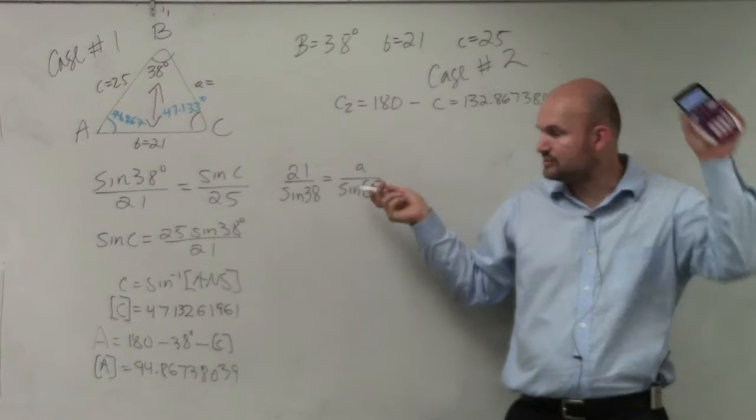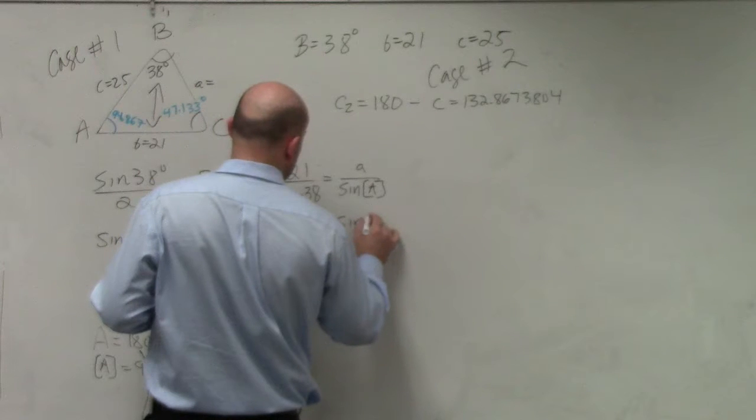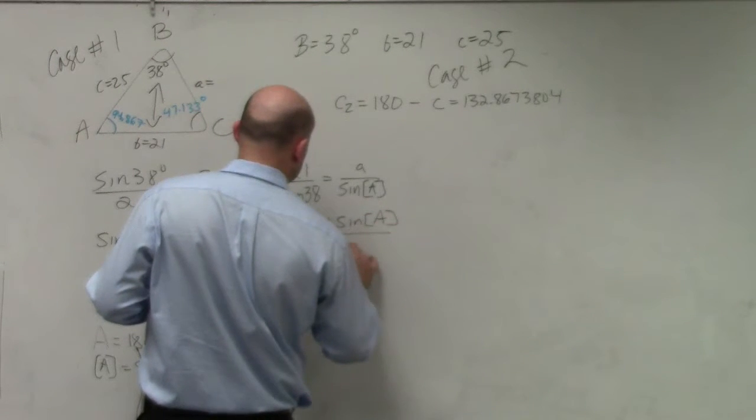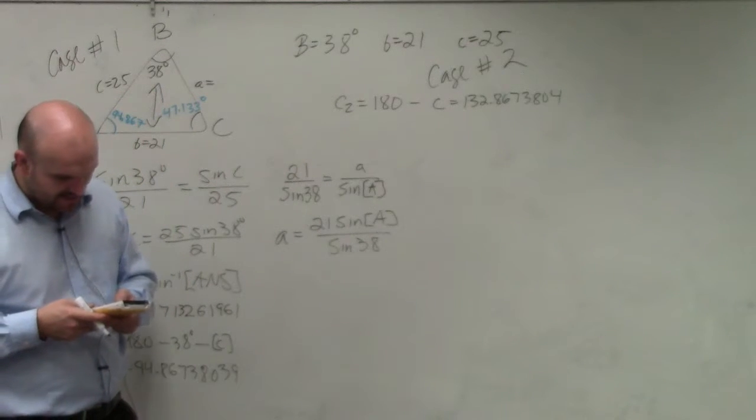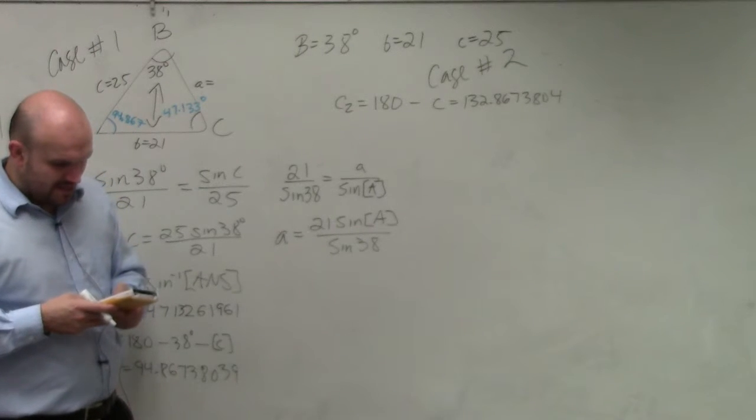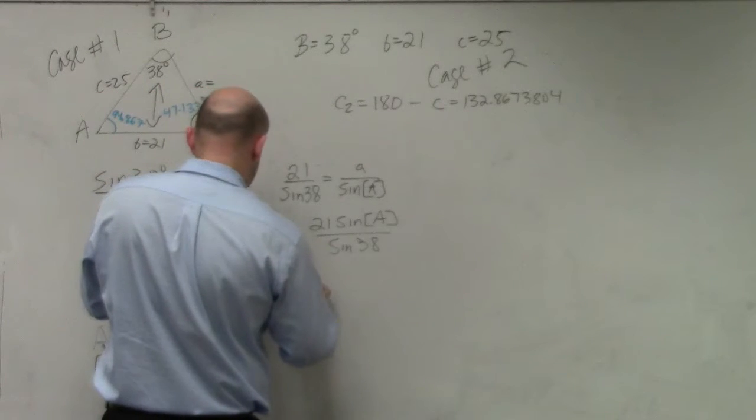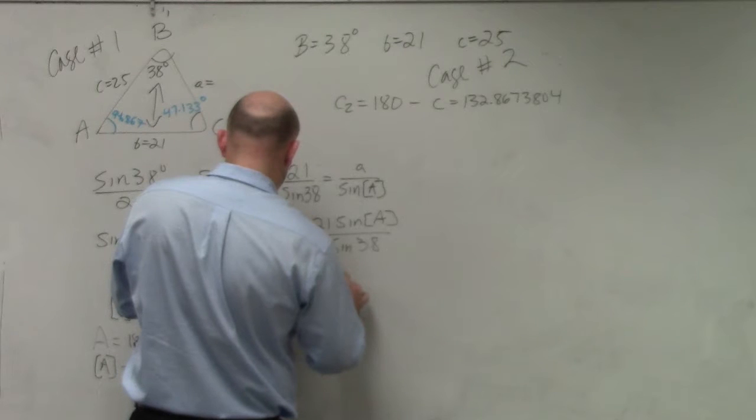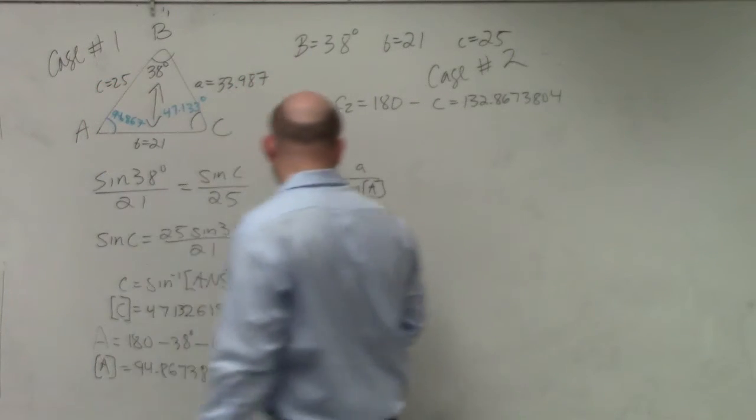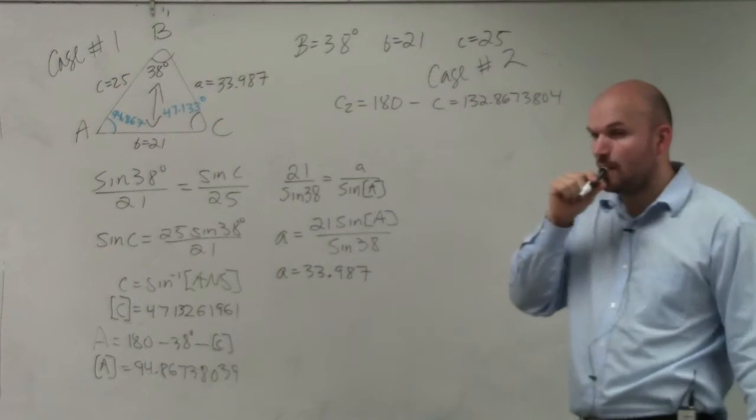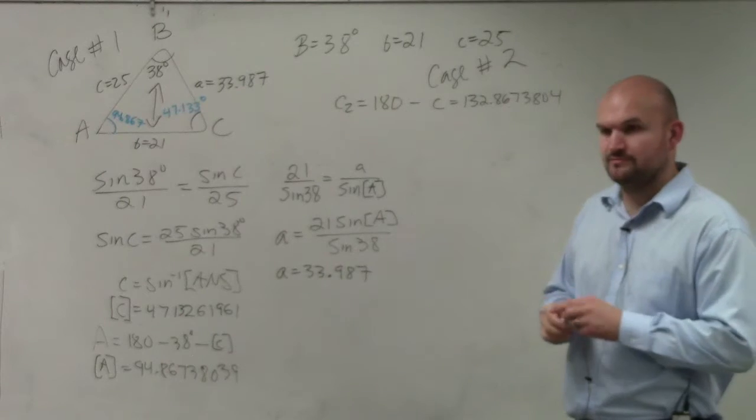And all I've got to do is multiply by sine of a, which is stored in my calculator. So therefore, a is equal to 21 sine of a divided by the sine of 38. So in my calculator, I do 21 times the sine of alpha a divided by the sine of 38. And I get a equals 33.987. I don't really get... I'll explain that in a second. But for actually right now, we just got to go move on for that.